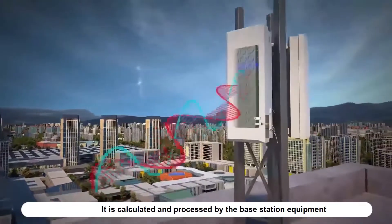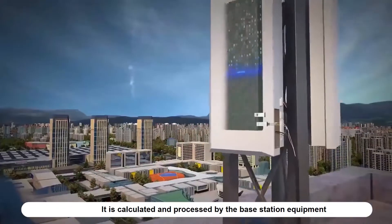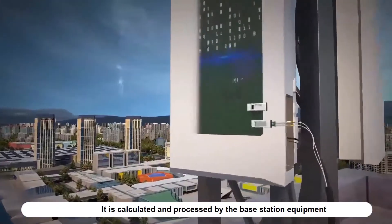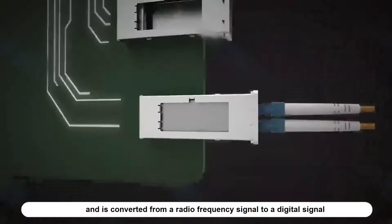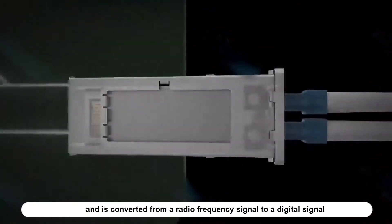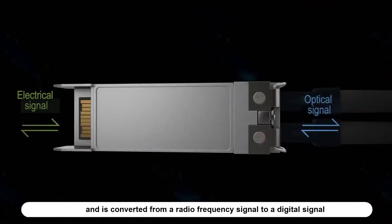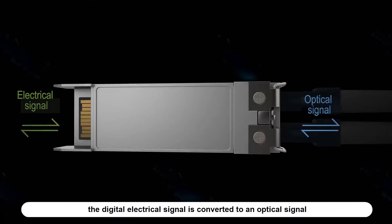It is calculated and processed by the base station equipment and is converted from a radio frequency signal to a digital signal. Passing through the optical transceiver processing unit inside the base station, the digital electrical signal is converted to an optical signal.